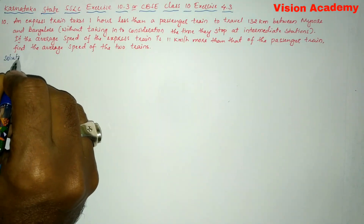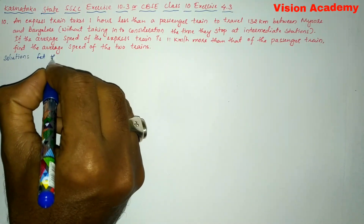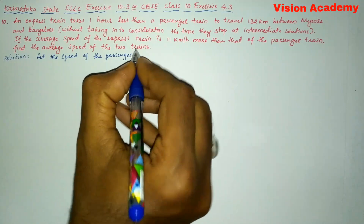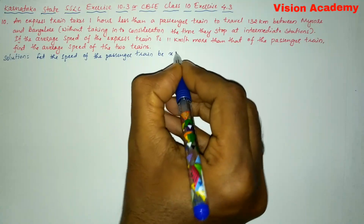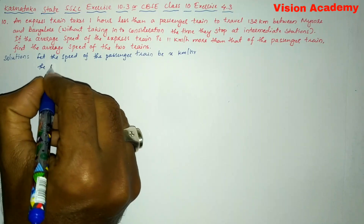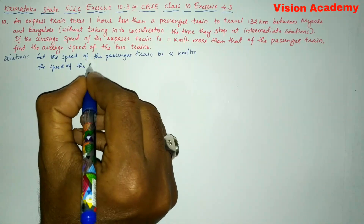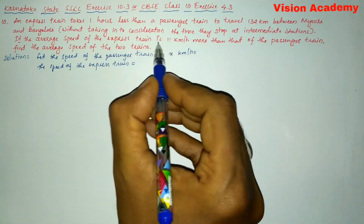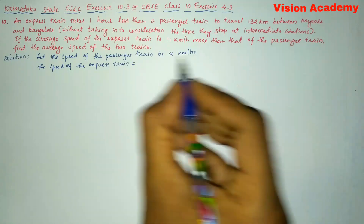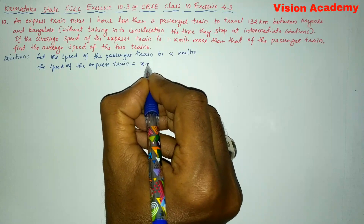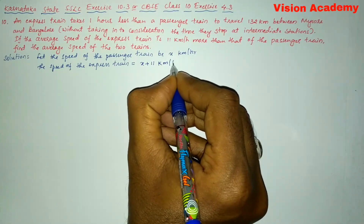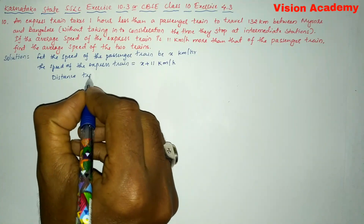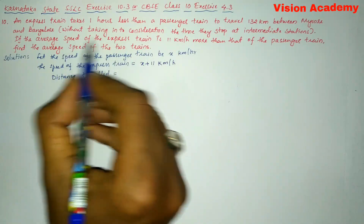Now let us find the solution for the given problem. Let the speed of the passenger train be x kilometers per hour. The speed of the express train is x plus 11 kilometers per hour, as given in the question — 11 kilometers per hour more than that of the passenger train. The distance traveled is equal to 132 kilometers.